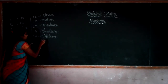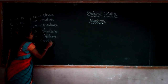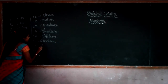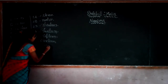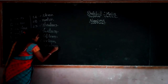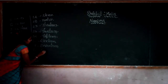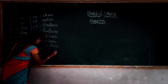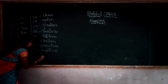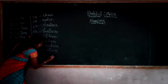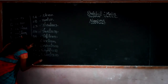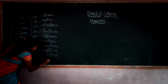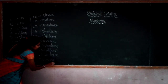You already know the spelling of 6; you just add T-E-E-N to get 16. Then 17 is S-E-V-E-N-T-E-E-N, 18 is E-I-G-H-T-E-E-N, 19 is N-I-N-E-T-E-E-N. And the last one, 20 is T-W-E-N-T-Y.